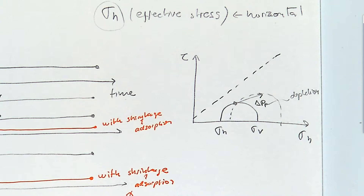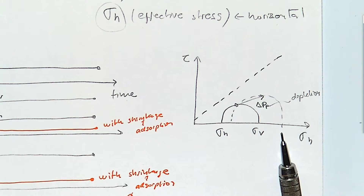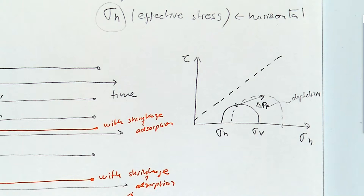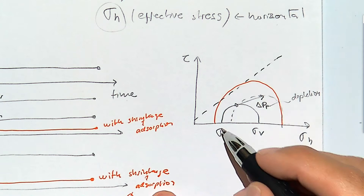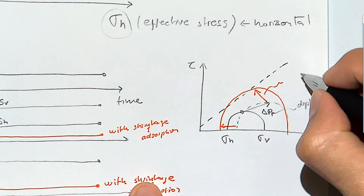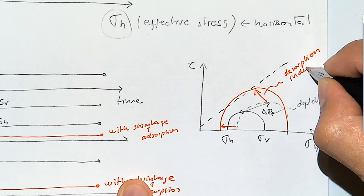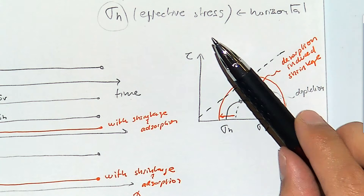But now, because of depletion-induced shrinkage, that's not going to change the pore pressure or the effective vertical stress — but it is going to change the effective horizontal stress. This results in a Mohr circle where the effective vertical stress is the same but the effective horizontal stress changes, and now you can get to shear failure. This stress path goes directly into shear failure.